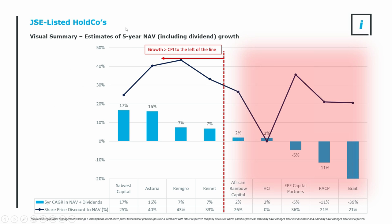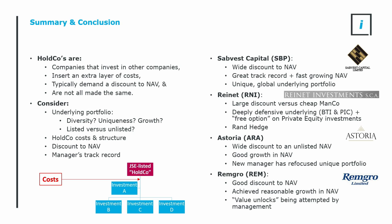One has to consider management track record, because five minutes after you invest in a holdco, management can sell the entire portfolio and invest into different investments — you're effectively partnering with management. Here is a different view: I've taken the five-year compounded net asset value growth, accounting for dividends, looking at growth across holdcos. You at least want to beat inflation. I've used 5 years because it's been such a messy period — pandemics, lockdowns, floods, riots — that it shows some agility to manage through good and bad times. What jumps out is Sabvest has a superb track record. Astoria has done well too. RemGro and RayNet have held their own.